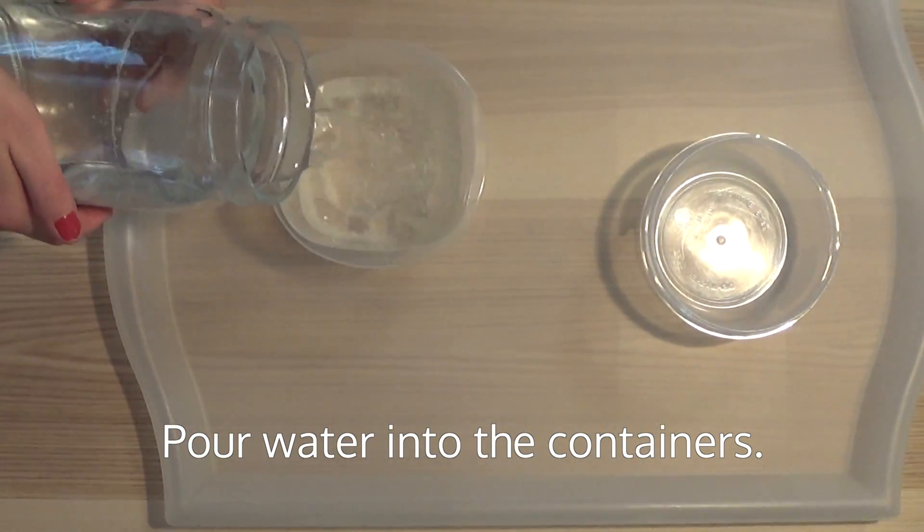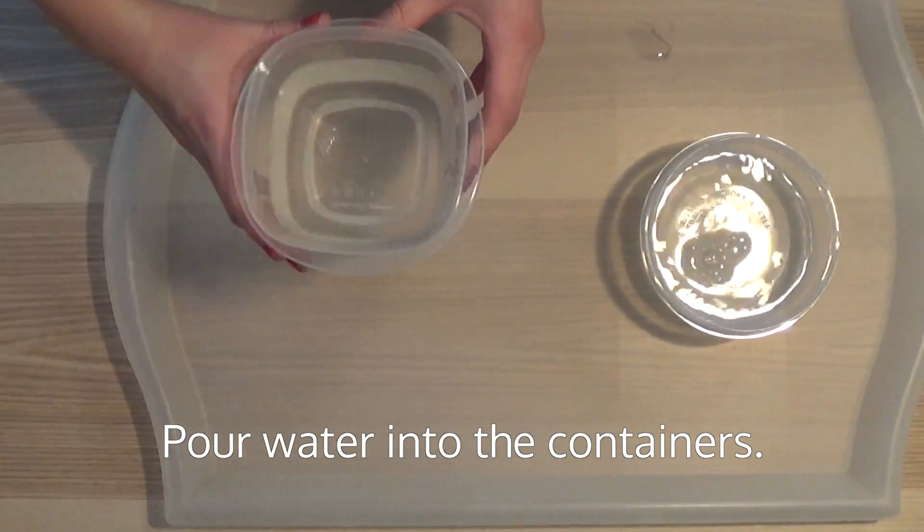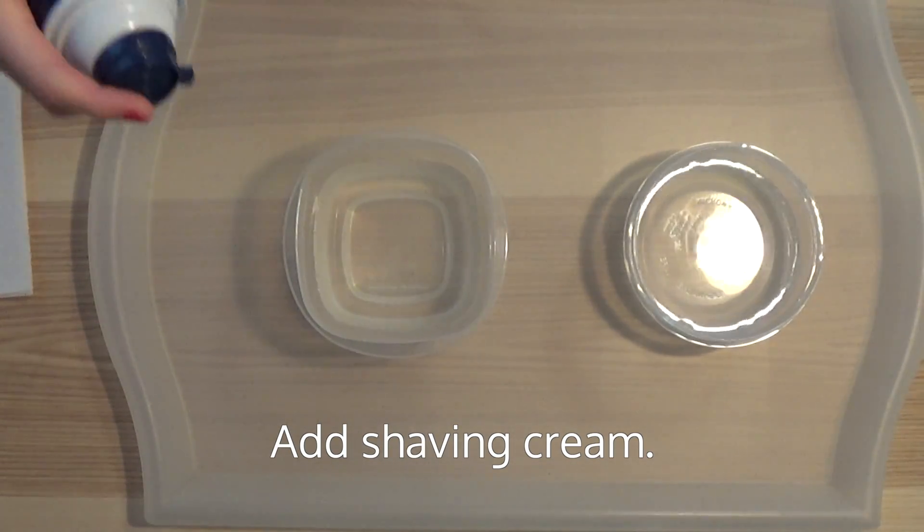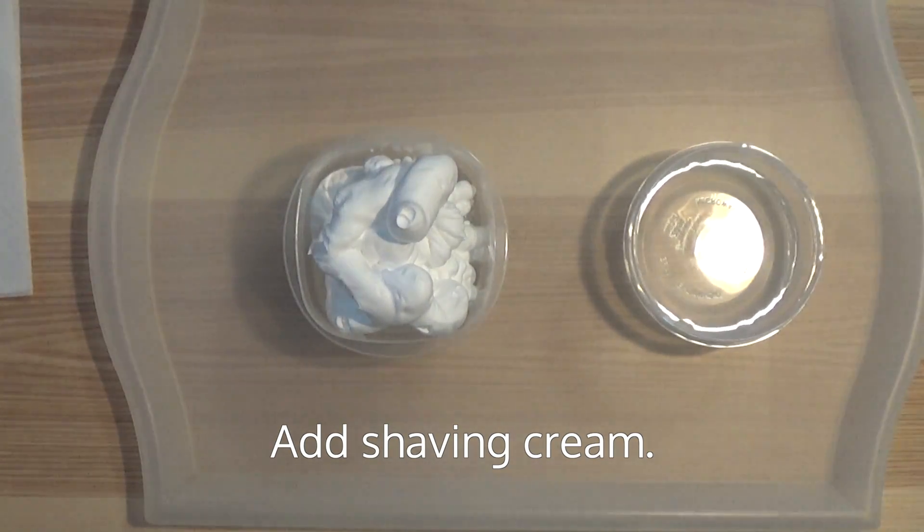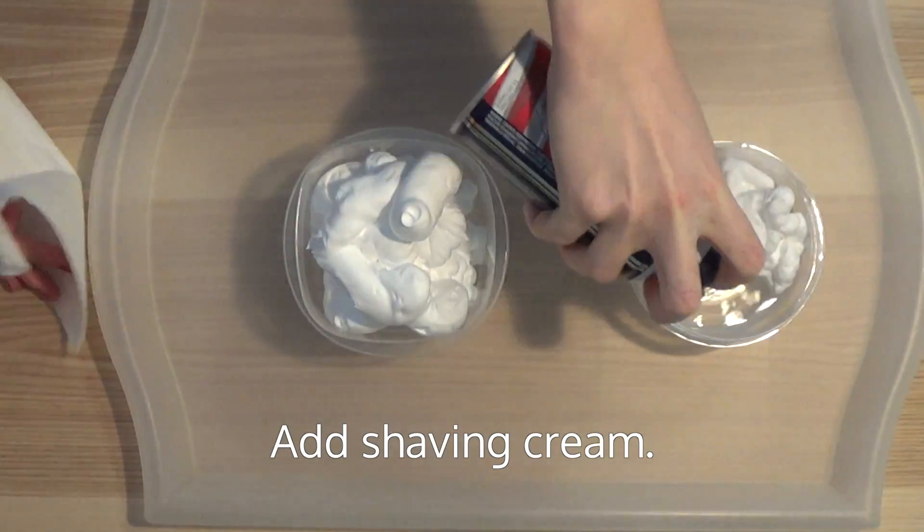First, pour water into the containers. Then add an equal amount of shaving cream. Vary the thickness of the shaving cream in the cup to make it look more like clouds.